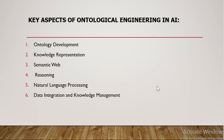Next is Natural Language Processing. By mapping text to ontological concepts, AI systems can extract more meaningful information and improve language understanding. The final aspect is Data Integration and Knowledge Management — it helps to structure and organize data, making it more accessible and useful for decision support and analytics. These are the key aspects of Ontological Engineering in AI technology.